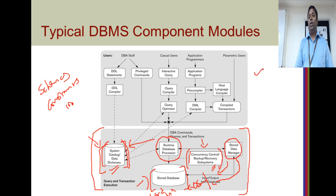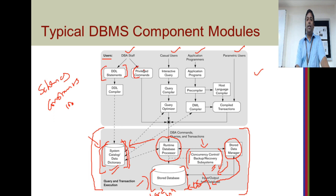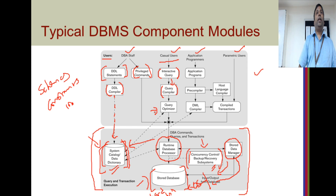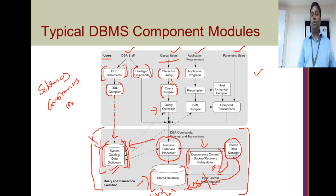On the outer level, you have different types of users: DBAs, casual users, application programmers, and parametric users. DBAs give data definition language commands or privileged commands to a DDL compiler, which compiles them and stores definitions in the dictionary — creating tables, indexes, and so on. Casual users use an interactive tool like SQL Plus to query the database and run reports. Their queries go to a query compiler, then to a query optimizer, which makes internal decisions on how to retrieve data faster, and finally to the runtime database processor.